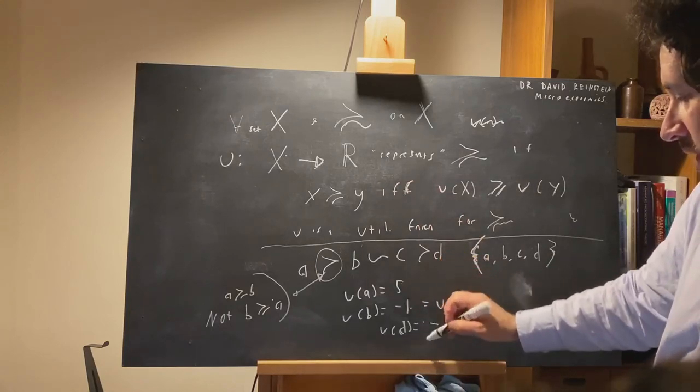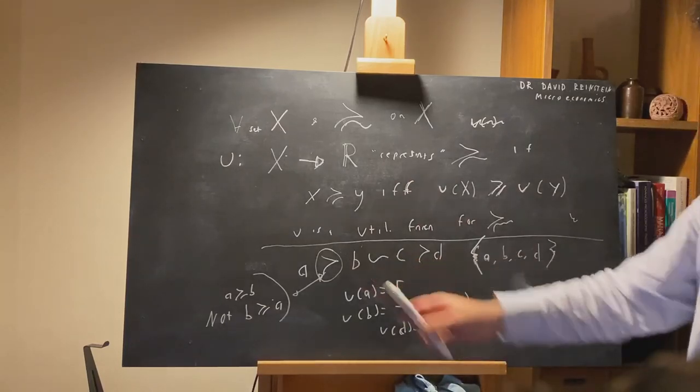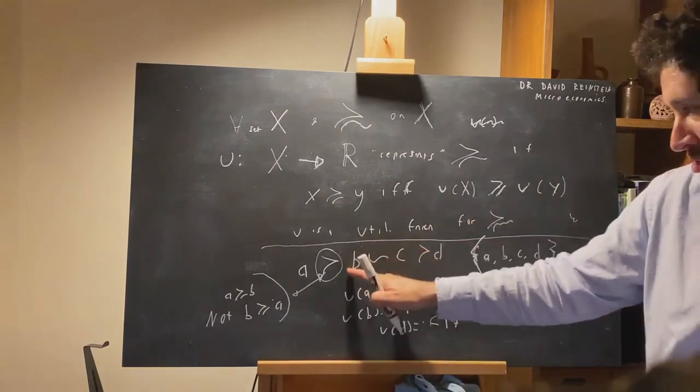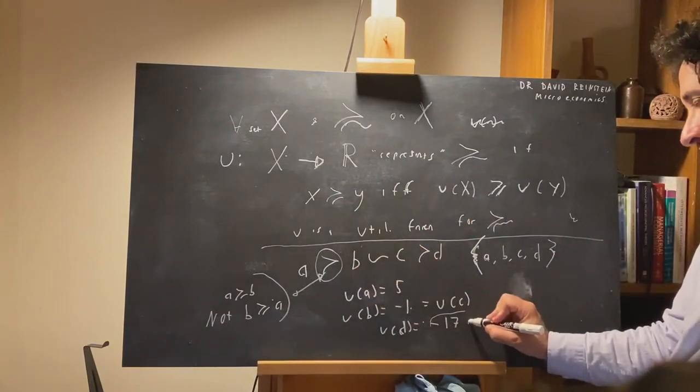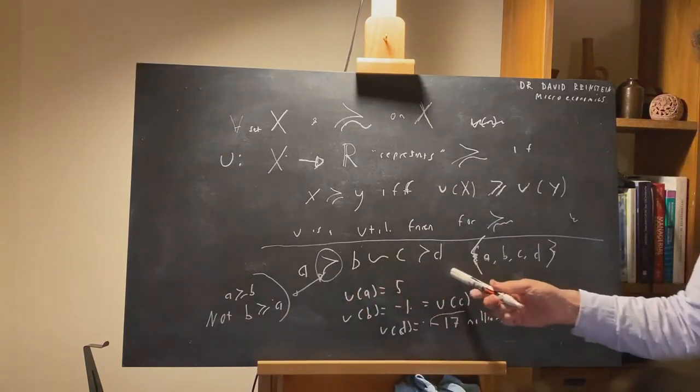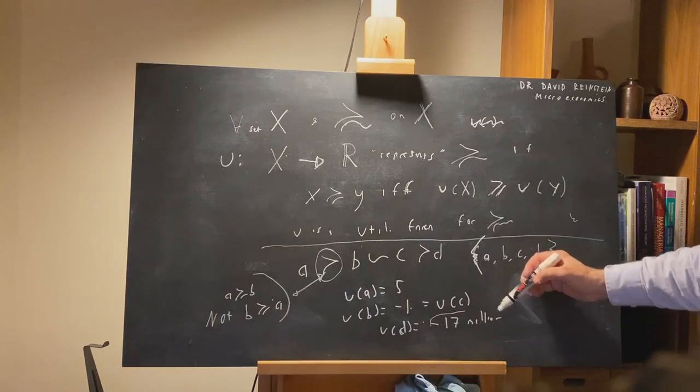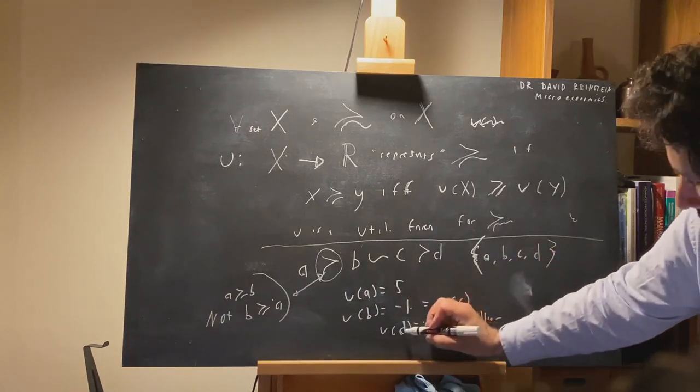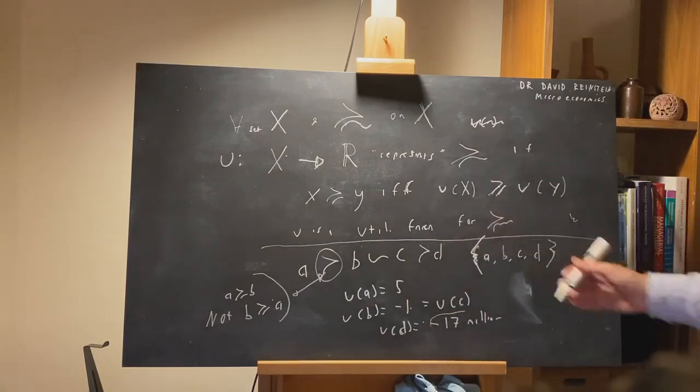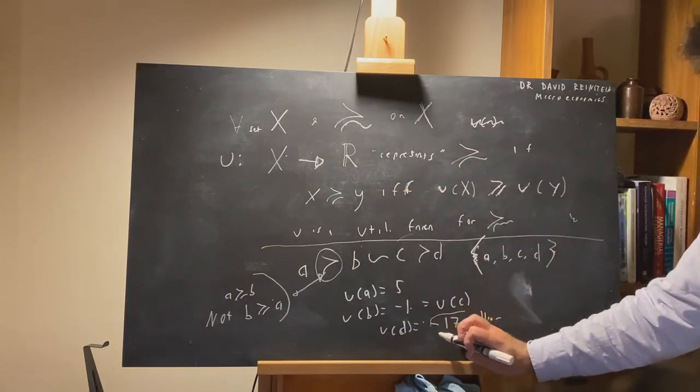The point you should take from this is this could be any number as long as it's less than negative one, as long as this utility of D is less than the utility of these guys. So this could be negative 17 million. I still wouldn't really be able to tell the difference between this utility function and the one that I just had up on the board. If I looked at choices, people would always choose, if they had C and D in a choice set, they would always choose C over D, whether D gives negative 17 or negative 17 million.